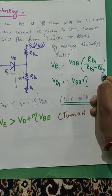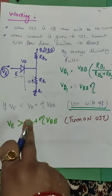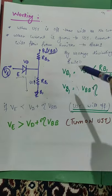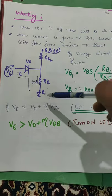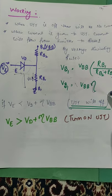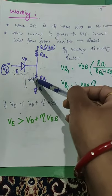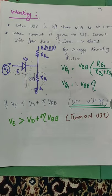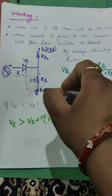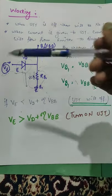This is the intrinsic standoff ratio, so VB1 equals VBB multiplied by eta. If VE is less than VD (diode voltage) plus VB1, the UJT will be off. If VE is greater than that voltage, UJT will turn on. In technical language: if VE is less than VD plus eta×VBB, UJT will be off; if VE is greater than VD plus eta×VBB, UJT will be turned on.